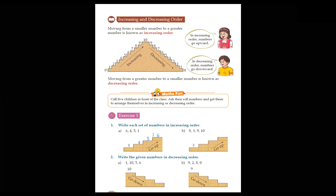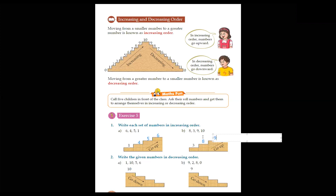Now see the second exercise. Here we have 4 numbers: 8, 3, 9, and 10. On the stairs, 3 is already given. After 3, our next number — 9 is greater than 8, so we mention 8 next. Then our next greater number is 9, and last number is 10. So: 3, then 8, then 9, then 10. That is our increasing order.